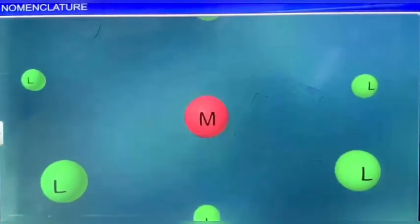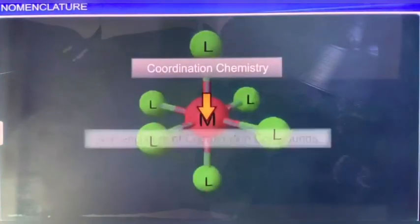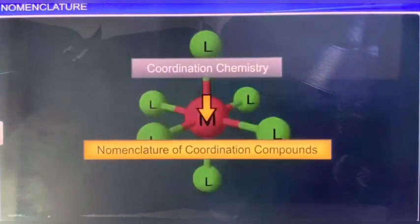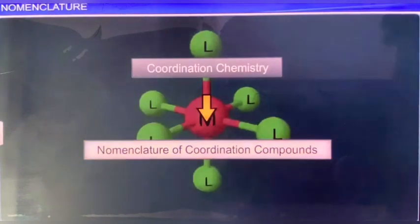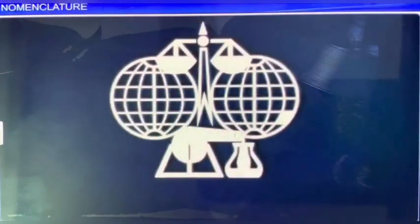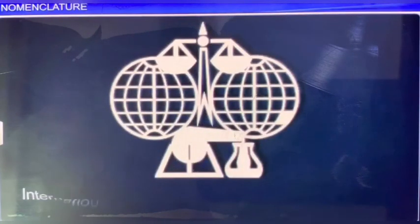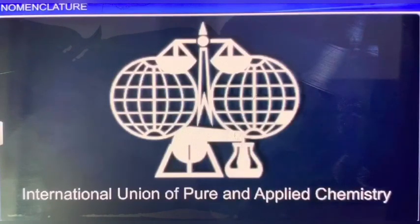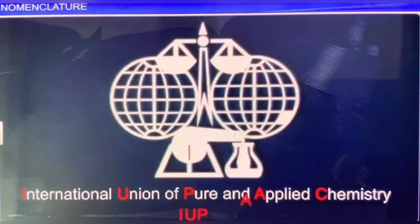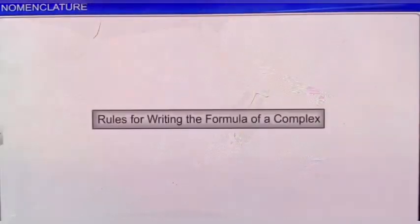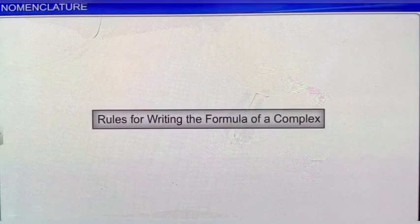An important aspect of coordination chemistry is the nomenclature of coordination compounds. The names and formulae of coordination compounds are written by employing the rules published by the International Union of Pure and Applied Chemistry, or IUPAC in short. Let's look at the rules framed by IUPAC for writing the formula of a complex.